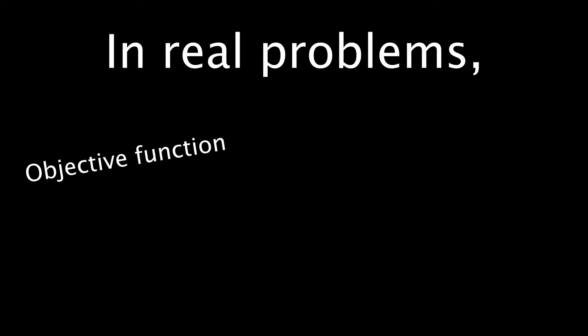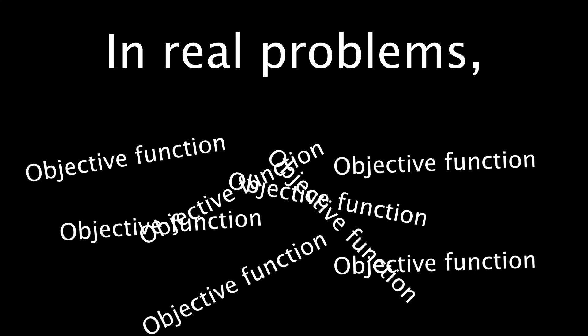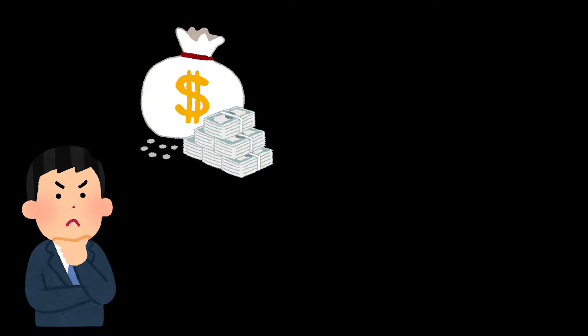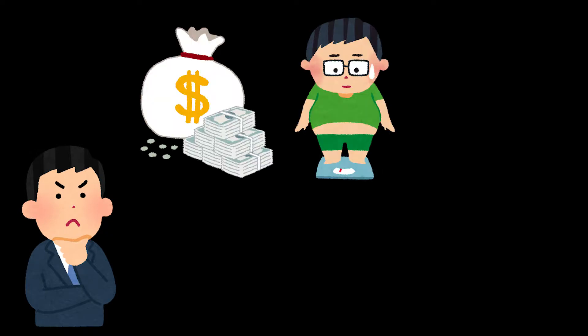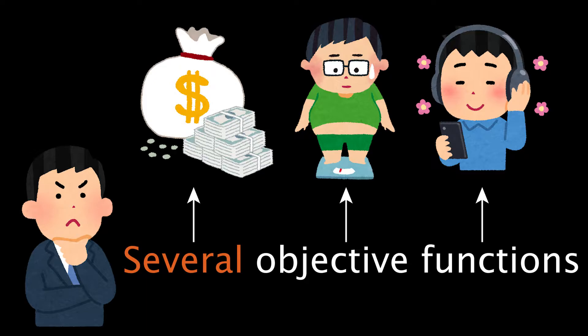However, in real problems, the number of objective functions is not necessarily only one. We always hope to maximize money, hope to minimize body weights, and hope to maximize free time in enjoying YouTube. Human beings constantly have several objective functions to optimize. That's why we should study multi-objective optimization.